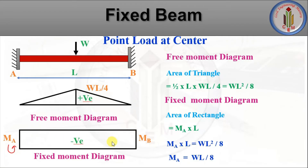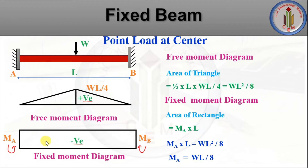At A, the moment MA is anti-clockwise (negative), and at B, the moment MB is clockwise (positive). To find MA, we equate the area of the free moment diagram triangle to the area of the fixed moment rectangle. Area of triangle = (1/2) × base × height = (1/2) × L × (WL/4) = WL²/8. Area of rectangle = L × MA. Equating: MA × L = WL²/8, giving MA = WL/8.